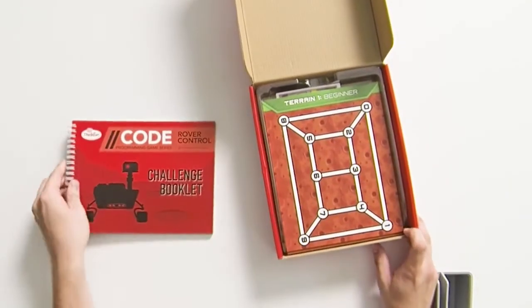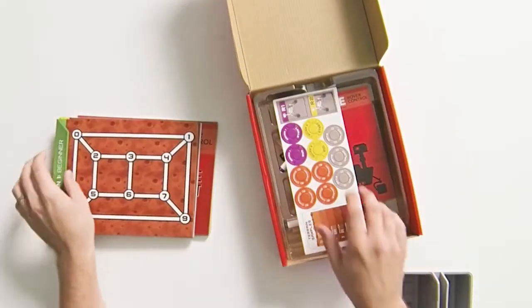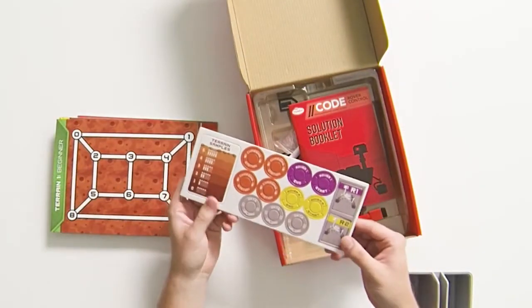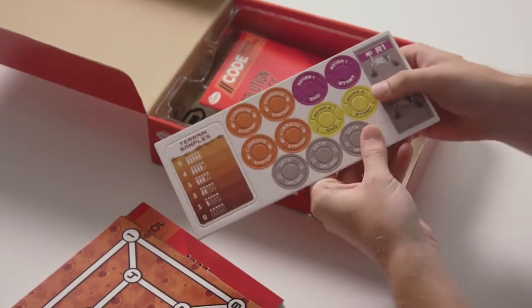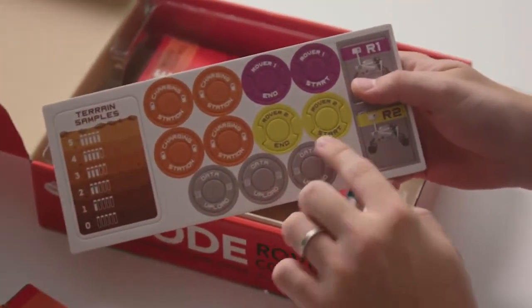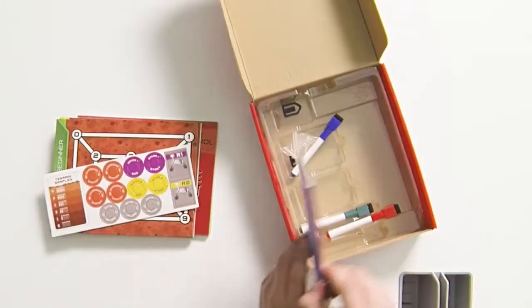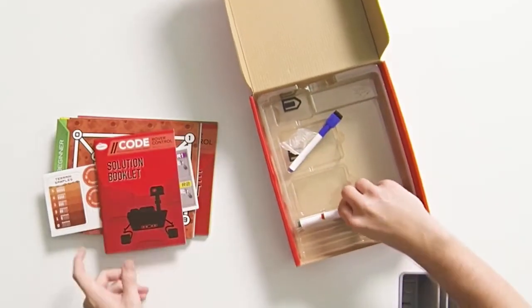Inside the box we have a challenge booklet, our game boards, a number of tokens that you use throughout, such as your rovers, as well as charging stations, data upload stations, start and end tokens, and terrain samples. We also have solutions and a few erasable markers.